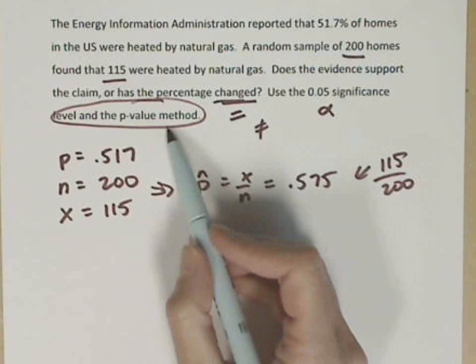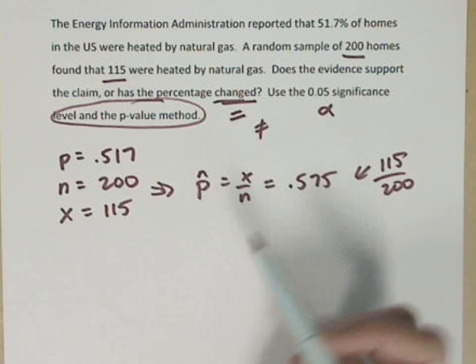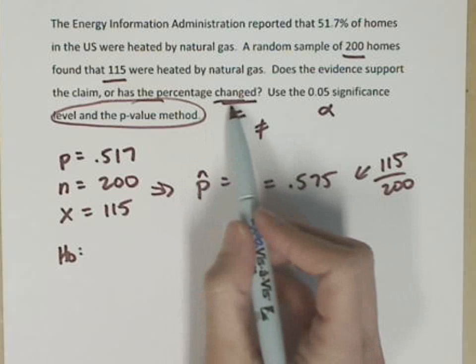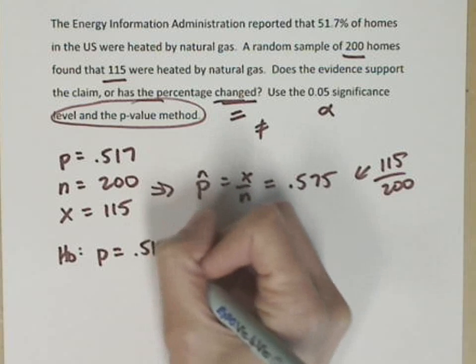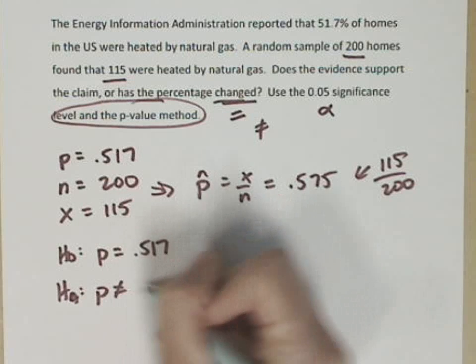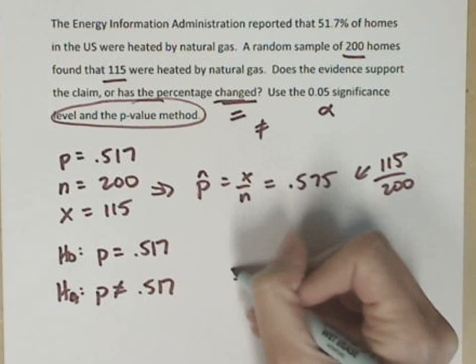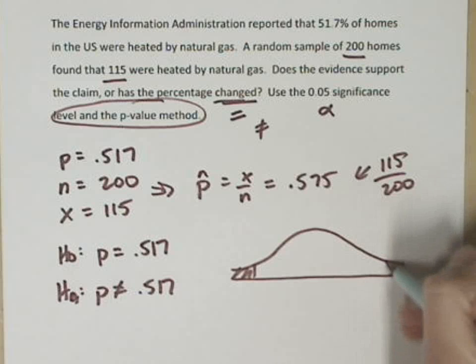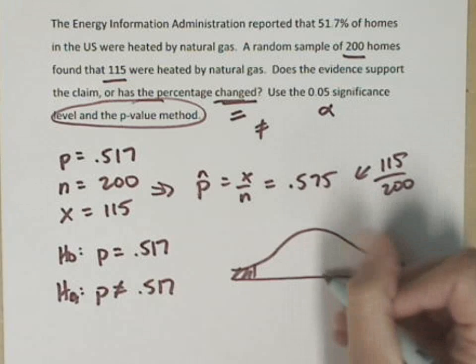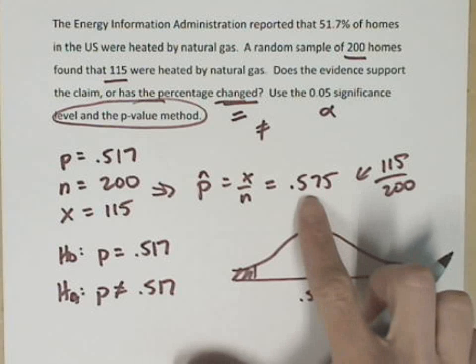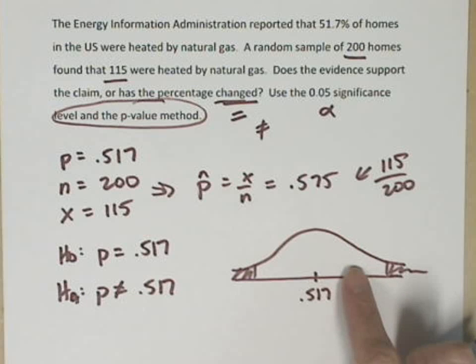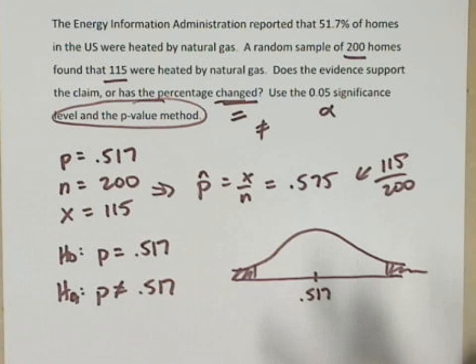The graphing calculator uses the p-value method, so I am going to do this particular hypothesis test using my TI-83 or TI-84. But I need to put my hypotheses together. For the null, p equals .517. And the alternative, p does not equal .517. This again is a two-tail test. I am significantly different on the left or on the right. My expected value goes here. I want to figure out where .575 lies.